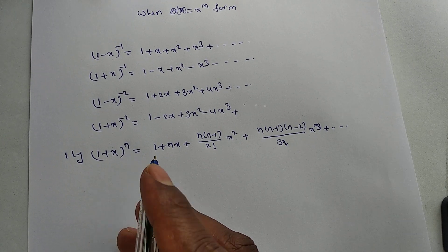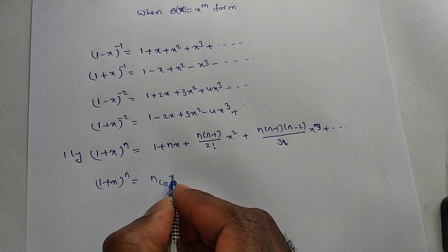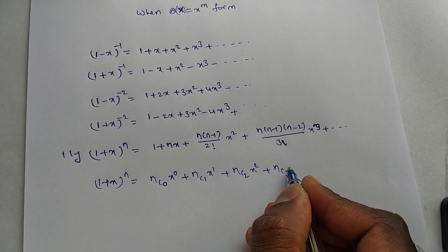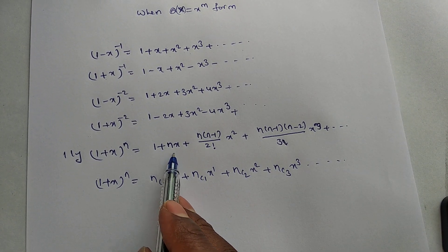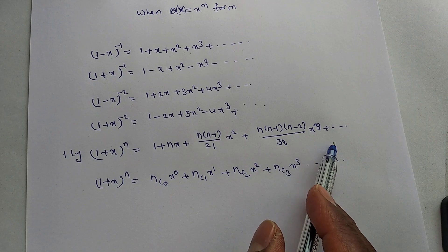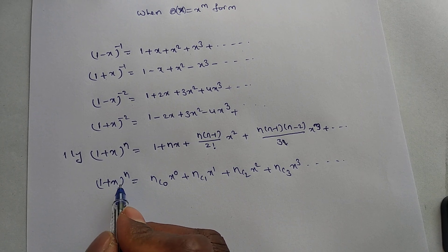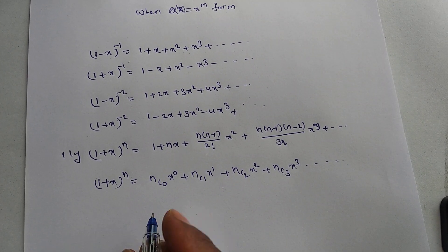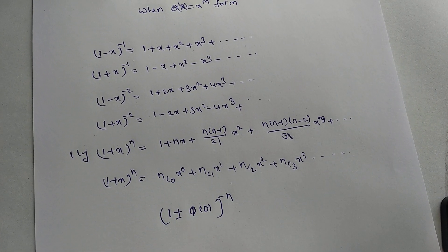The general binomial expansion is (1+x)^n = C(n,0)·x⁰ + C(n,1)·x¹ + C(n,2)·x² + C(n,3)·x³ + ..., where C(n,0)=1, C(n,1)=n, C(n,2)=n(n-1)/2!, C(n,3)=n(n-1)(n-2)/3!, and so on. This works for any n, including n = ±3, ±4, etc. Using this, we can expand [1 ± φ(D)]^(-n) and then solve problems.